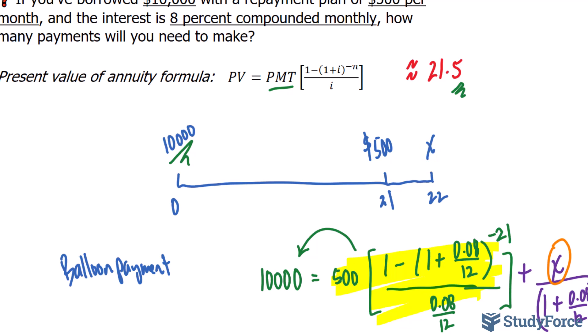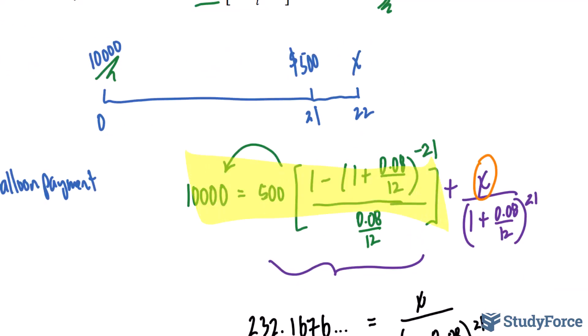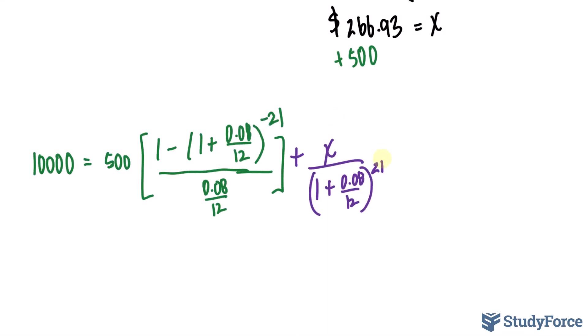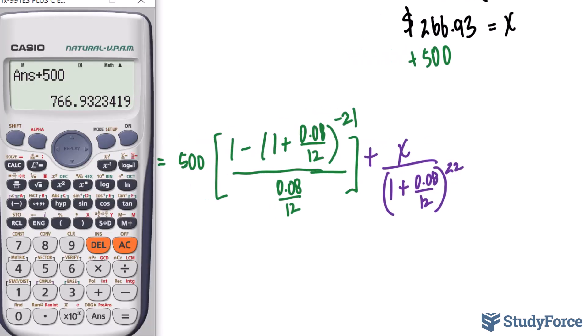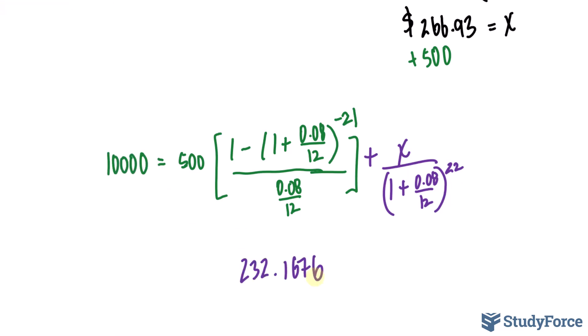To calculate this, not much changes. In fact, what you see highlighted in this equation remains the same. The only thing that changes is the second term in the equation. Instead of this 21, it becomes 22. Let me rewrite that so that we have a way of comparing the two equations. This was the setup for the balloon payment, and this is the setup for the drop payment. Let's take some values we calculated already. We have 232.1676. But the right side now has changed slightly with the exponent being 22 instead of 21.